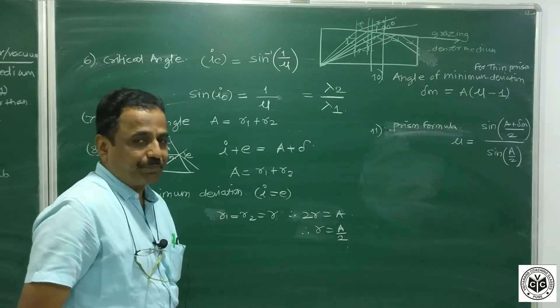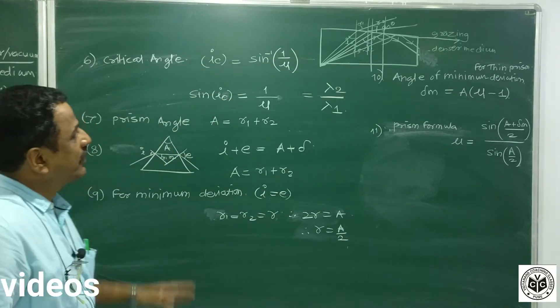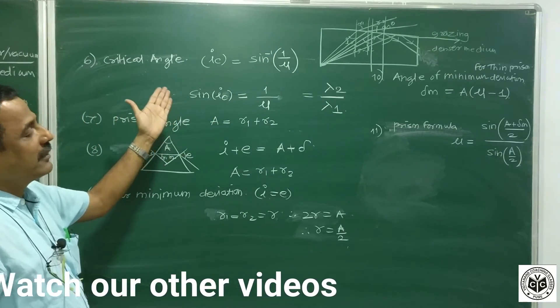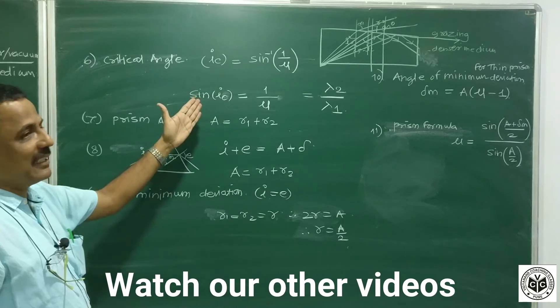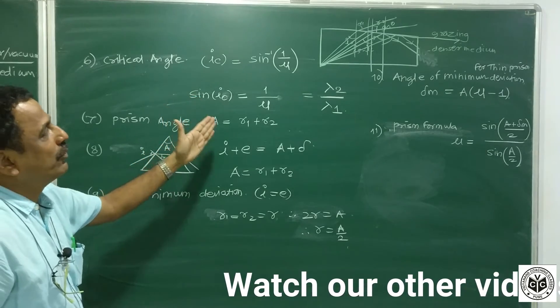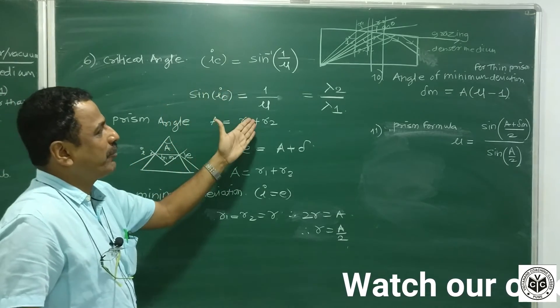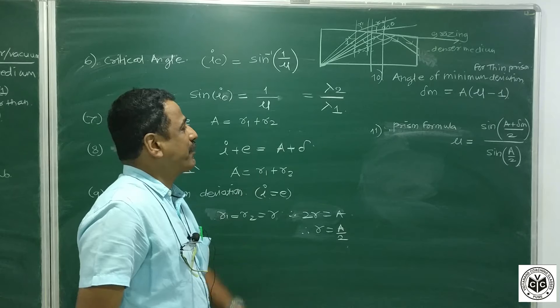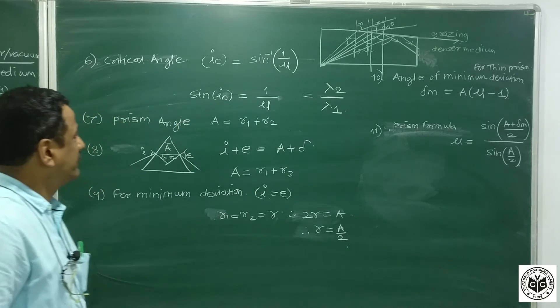For the critical angle, ic equals sine inverse of (1 upon mu). Equivalently, sine ic equals 1 upon mu, which also equals lambda2 upon lambda1.